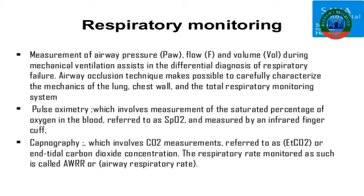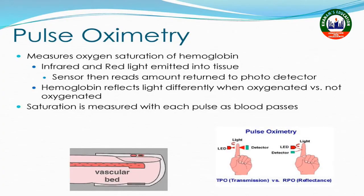Respiratory monitoring is another important monitoring to be done during anesthesia. We measure the oxygenation — the oxygen level — which is known as pulse oximetry. It is the most basic and mandatory monitor used in hospitals to measure the oxygen saturation of hemoglobin in the arterial blood. For the measurement of oxygenation in the patient's body, we go for pulse oximetry.